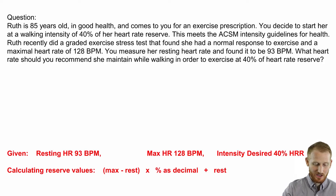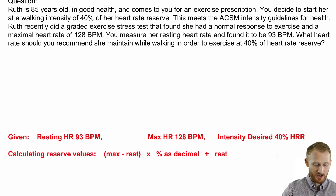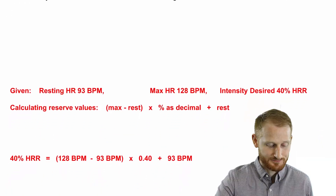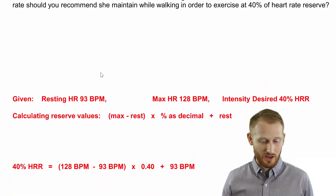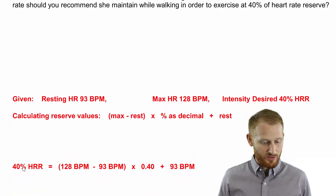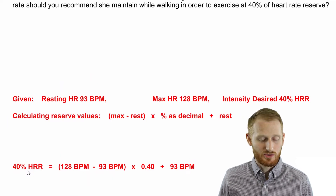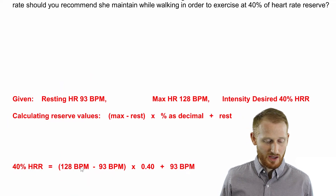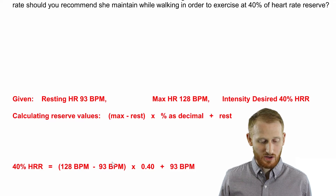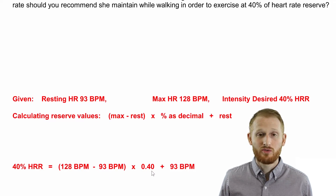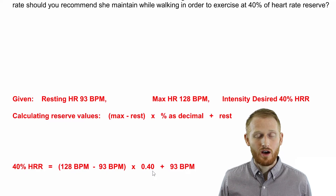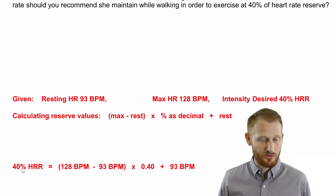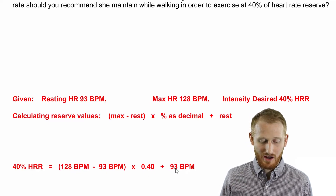Let's plug in these values. We're calculating 40% of heart rate reserve. We plug in 128 for her max, 93 for resting, 0.40 as the decimal format of 40%, and then add in the resting value again.